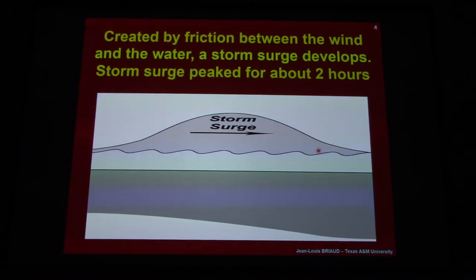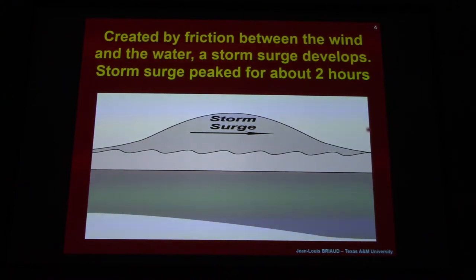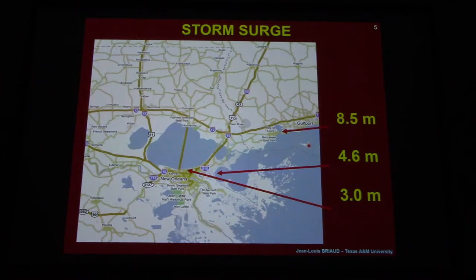The wind is at very high speed, approaching 200 miles per hour. Because of the friction between the wind and the water, the wind is actually pushing the water, and that creates a storm surge. New Orleans would be here on the coast and the hurricane is coming from the Gulf of Mexico. The wind pushes the water, a storm surge develops, and this storm surge attacks the coast.